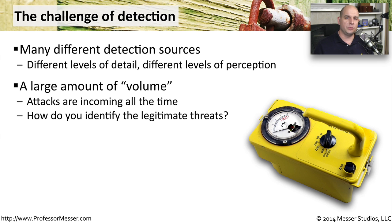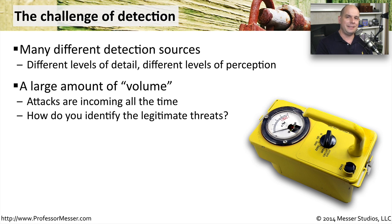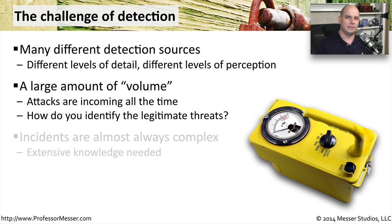One of the challenges we have is that our networks are constantly under attack. If you're connected to the internet, there are automated processes, bots, worms, and people maliciously trying to gain access to your systems. So the question really is, of this traffic, how much of it is a legitimate threat and how much of it is going to be stopped by the existing systems we have in place?